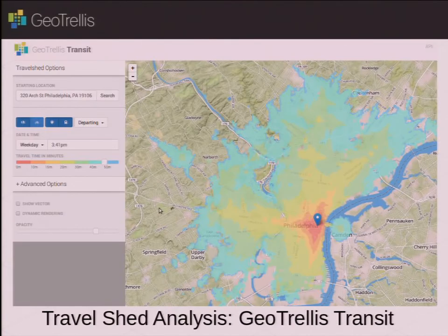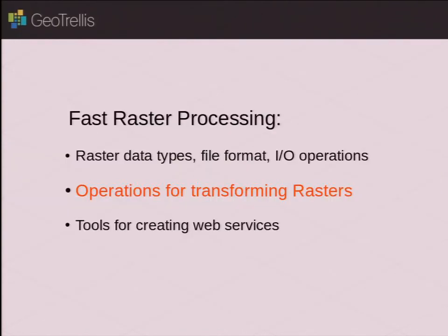We also did a project called GeoTrellis transit that does shortest path. It uses GTFS data, which was talked about, also OpenStreetMap data, loads it into a graph structure, does shortest path analysis on it, and creates a travel shed. I'd love to go over this further, because it's a really cool algorithm, really cool idea, but I don't have time. So if you want to know more about that, talk to me afterwards.